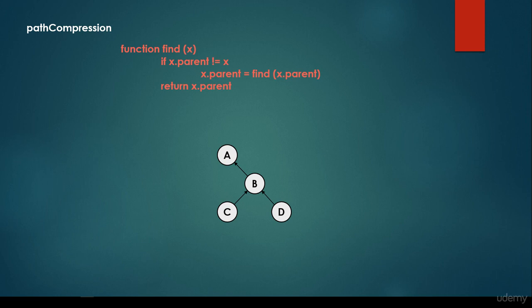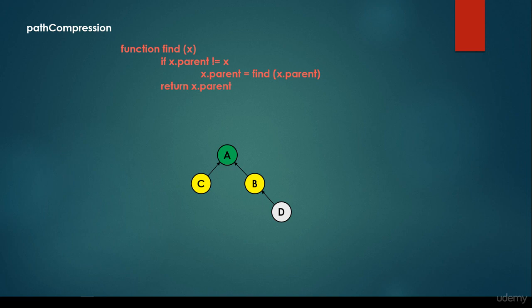We have this tree-like structure, this disjoint set — we can represent disjoint sets with the help of tree-like structures. For example, I would like to find c. Because of path compression, I'm going to call the find method recursively on the parent of c, which is b, and I come to the conclusion that the parent of b is the representative itself. So I'm going to attach c to be the child of the representative directly. The next time I look for c, I can find it very easily and return the representative. Whenever I call find on c, b, or d, all of them will return the representative.